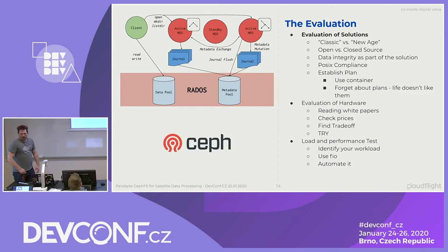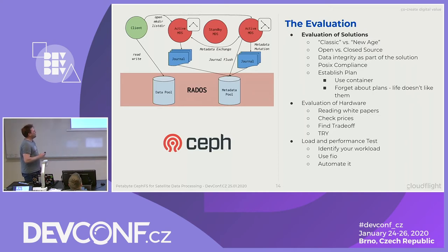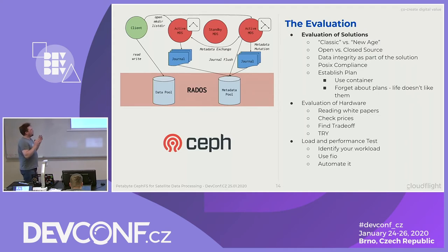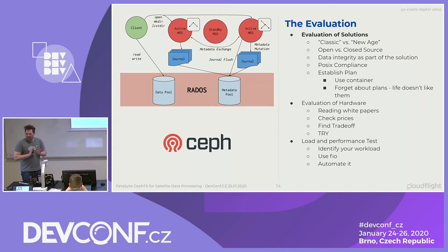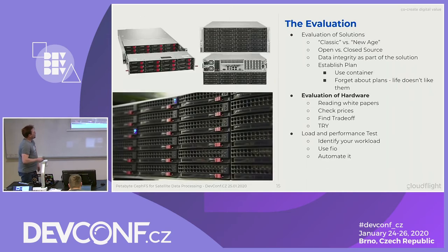Gregory thankfully already explained the basics of Ceph itself, so I don't have to explain that anymore. This is roughly how CephFS works. We have a data pool — a data pool is a logical unit in the Ceph construct which has a CRUSH rule behind it, which determines where objects should be placed. We have a metadata pool, a client, and the things called metadata servers — these are the ones which know where files live.